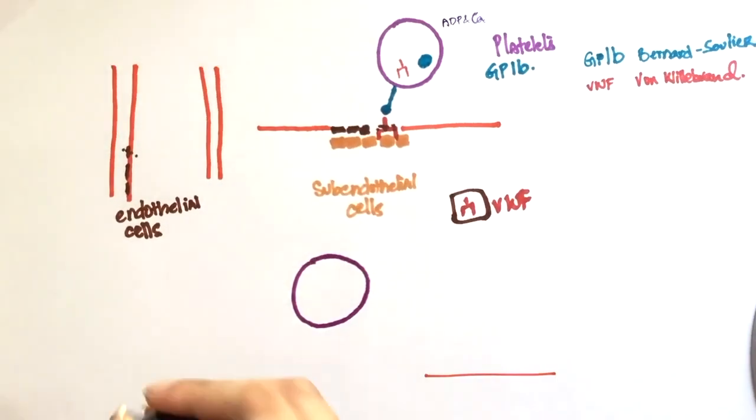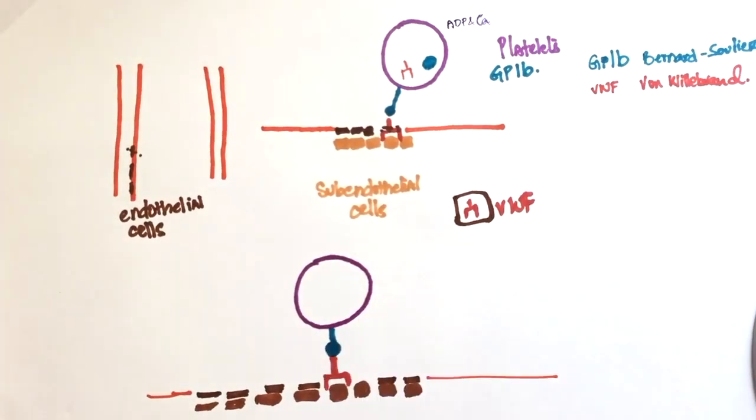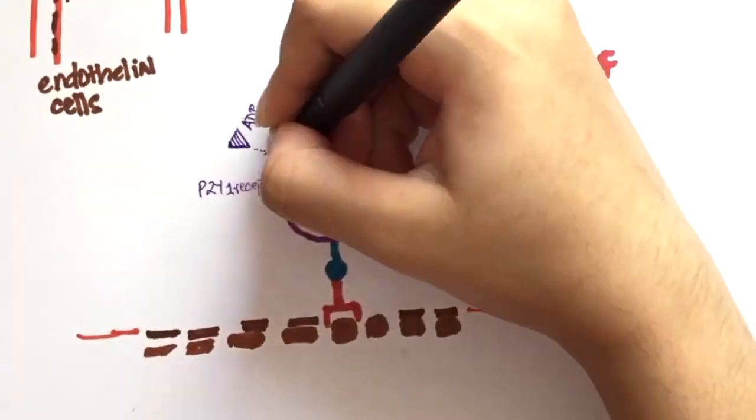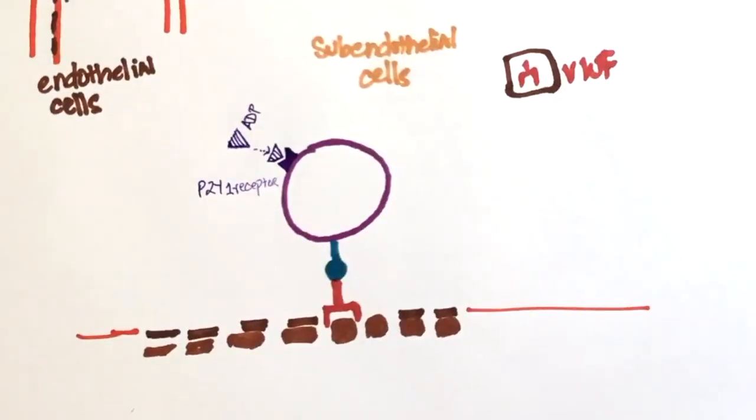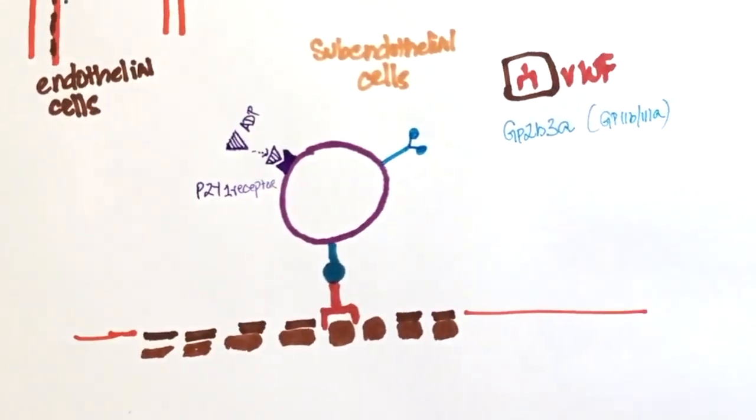We just saw that this entire complex increases the release of ADP. The released ADP binds to P2Y12 receptor on platelets. Once this binding takes place, it increases the expression of GP2B3A.